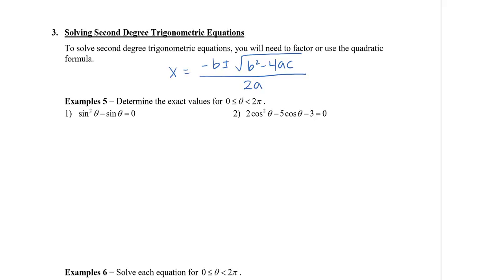So let's take a look at the first one. We have sine squared theta minus sine theta. There are only two terms here, so we don't really need to use the quadratic formula because I can see that I can actually factor out a sine theta. What I'm left with inside the brackets is sine theta minus 1.